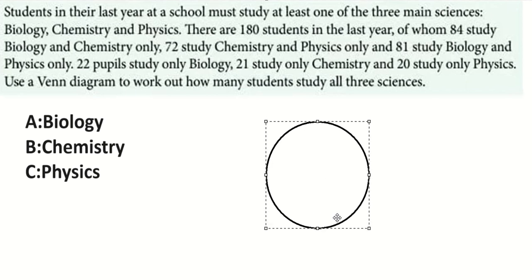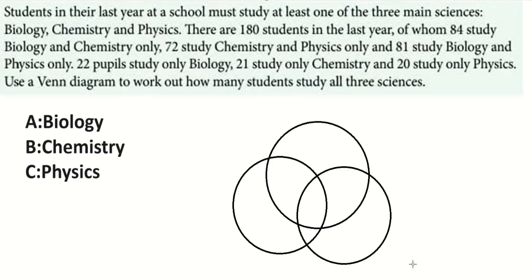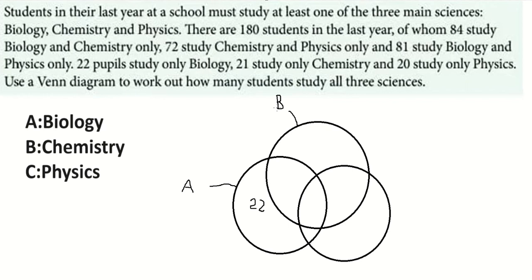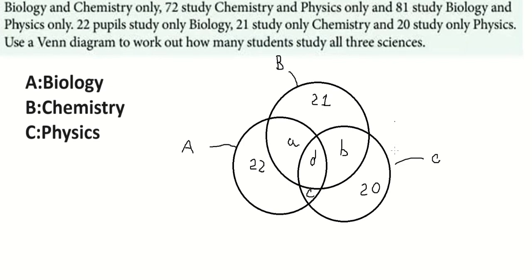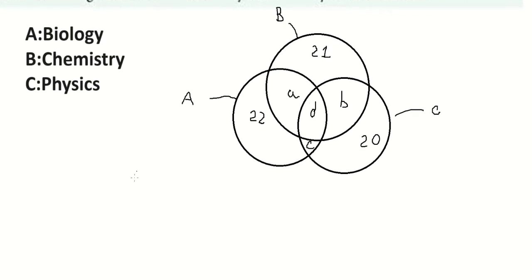We have A with 22 students studying biology, B with 21 students studying chemistry, and C with 20 students studying physics. We need to find the value of D, which I will place in the center of the diagram, representing the intersection of all three subjects.